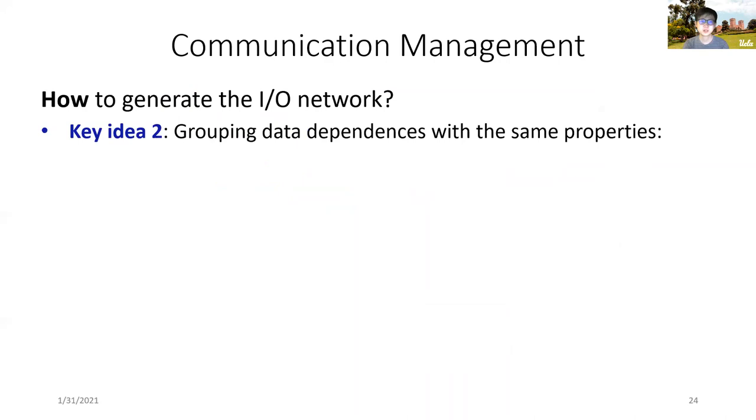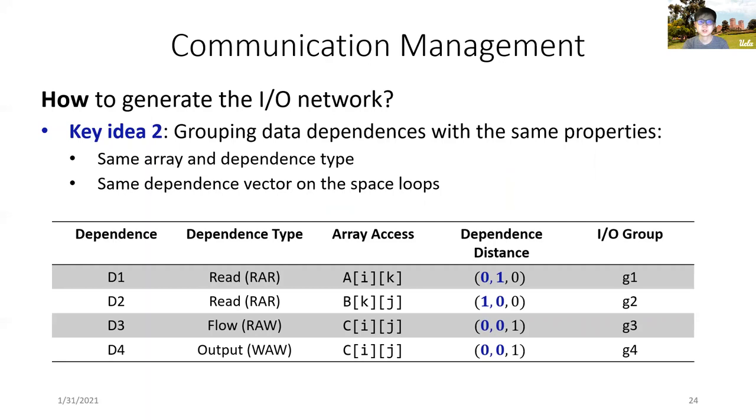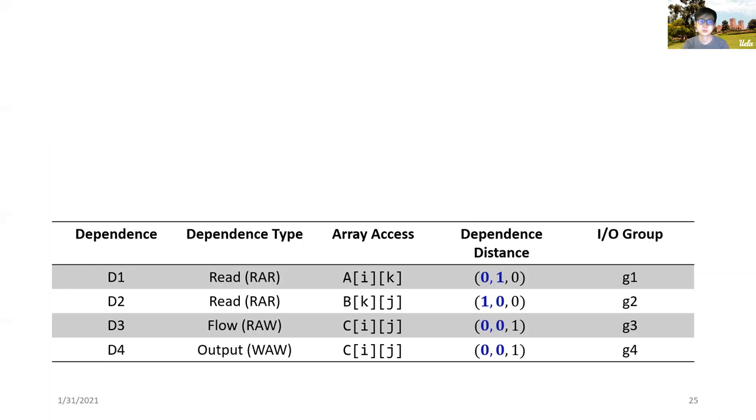Given the data dependencies, the next key idea is to group data dependencies given different properties. We will group them together if they share the following two properties. First, they are from the same array and of the same dependence type. Second, they have the same dependence distance vector on the space loops. For all the dependencies in the matrix multiplication example, based on the above criteria, we can group them into four different I/O groups.